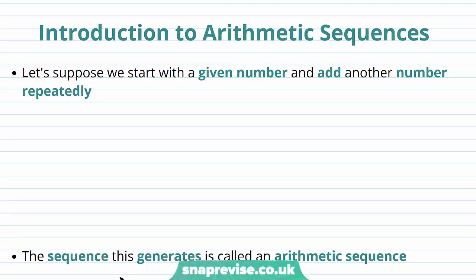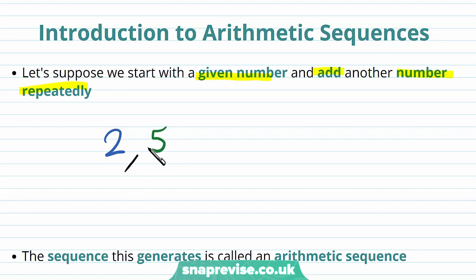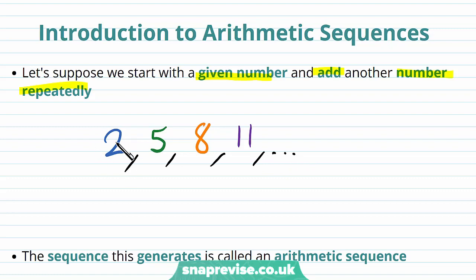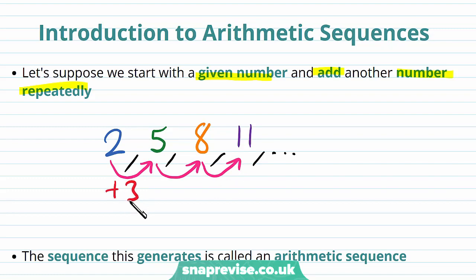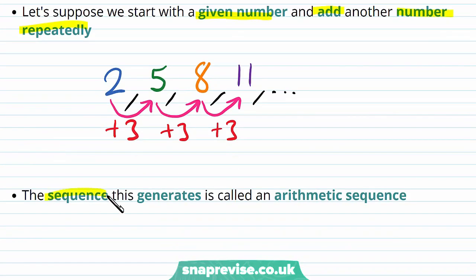So what exactly are arithmetic sequences? Let's suppose we start with a given number and add another number repeatedly. Let's say our first term is 2, and then our next term is 5, our next term will be 8, and then from that we'll have 11, and this sequence will continue. We had our first term 2, and then at each stage we added a constant number, and that number in this case is plus 3. The sequence this generates is called an arithmetic sequence.